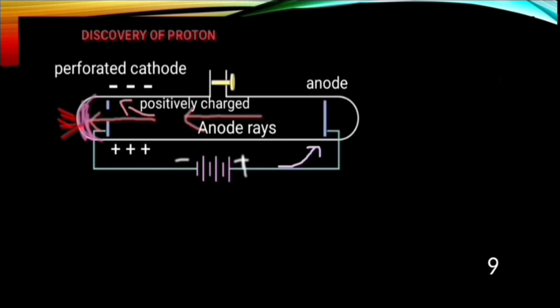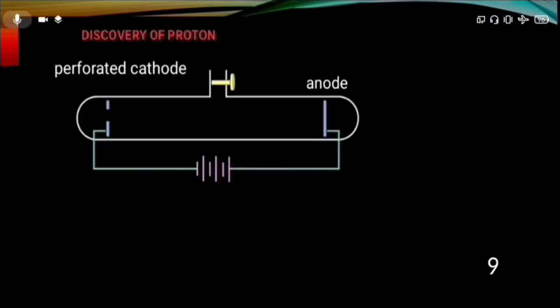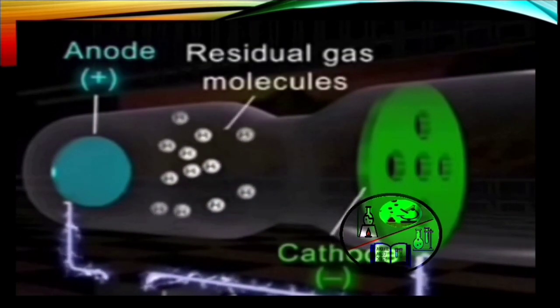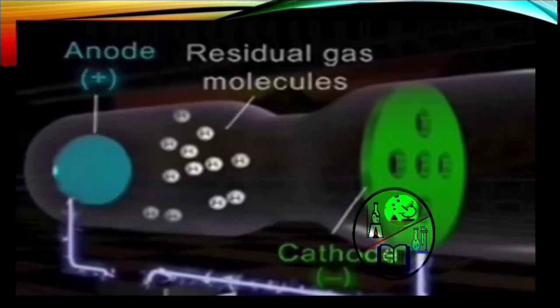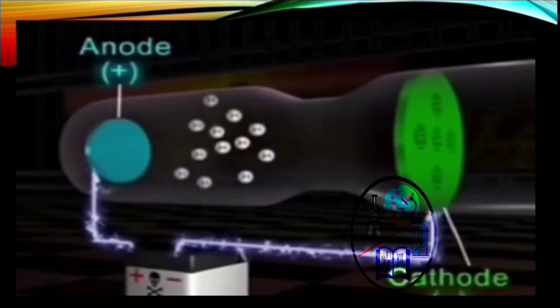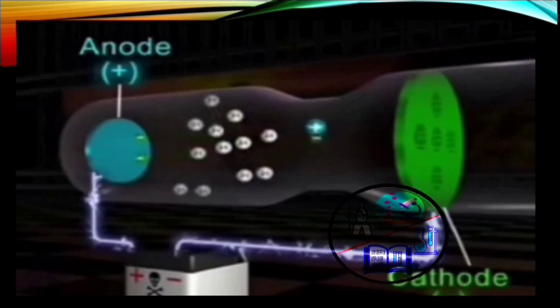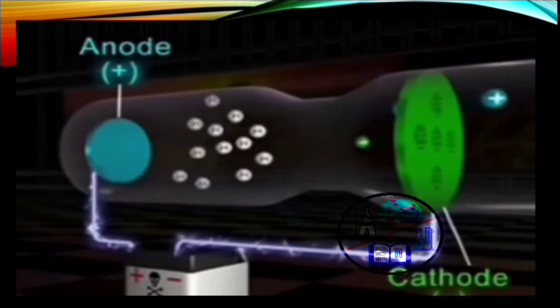These rays have also been called canal rays because they have passed through the holes or canals present in the perforated cathode. Now let's see how the visual impact was. When the high voltage is applied to the tube, its electric field accelerates the small number of ions always present in the gas which are created by the natural process. These collide with the atoms of the gas, knocking electrons off and creating more positive ions.